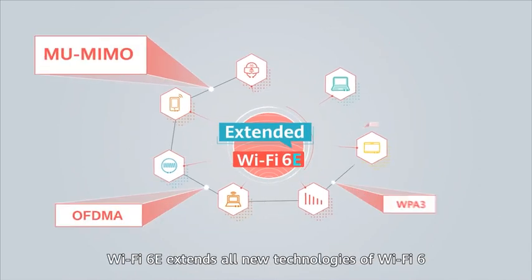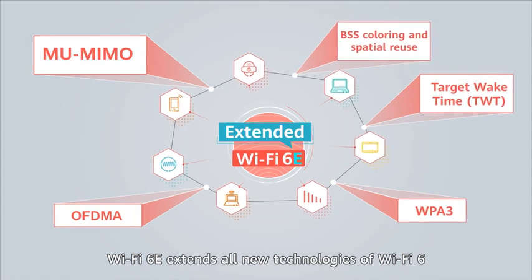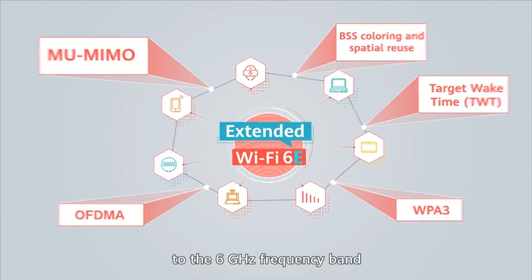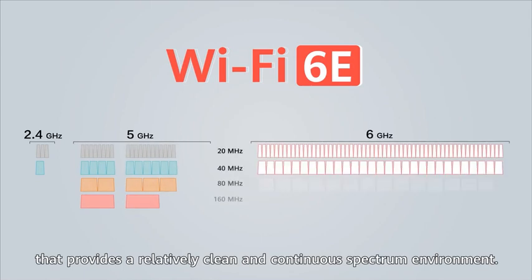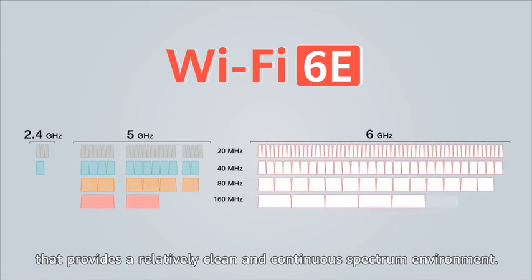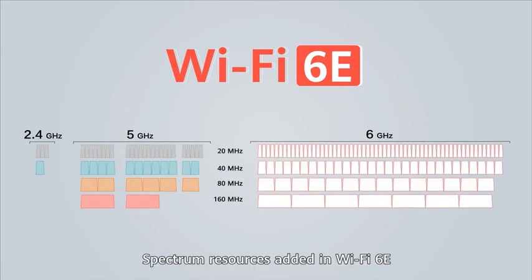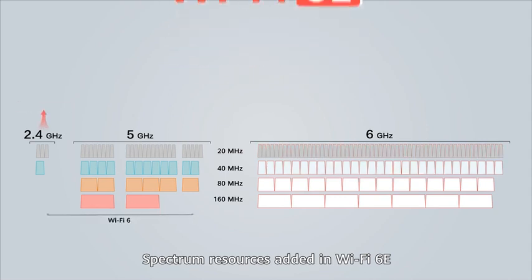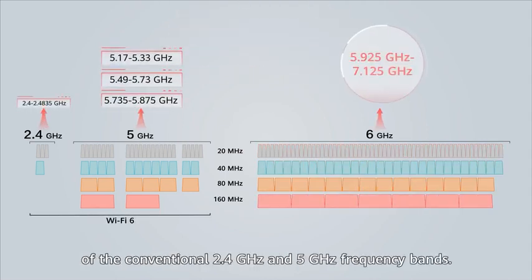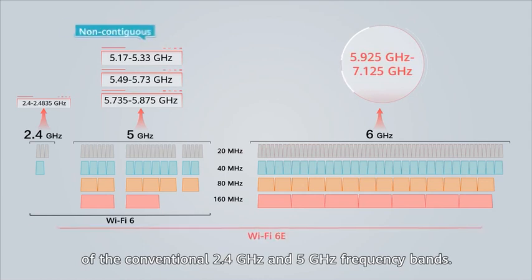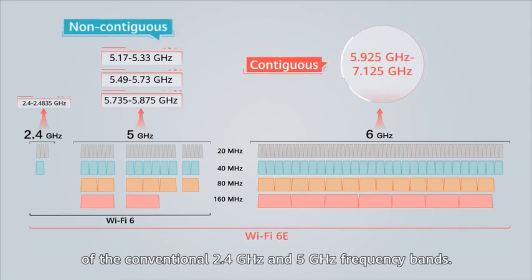Wi-Fi 6E extends all new technologies of Wi-Fi 6 to the 6 GHz frequency band, which provides a relatively clean and continuous spectrum environment. Spectrum resources added in Wi-Fi 6E are even more than the combined resources of the conventional 2.4 and 5 GHz frequency bands.